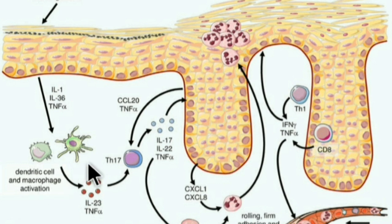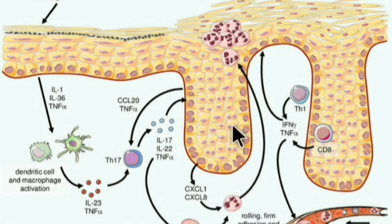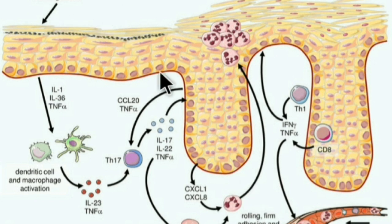Deletions of the LCE gene cluster 3B and 3C are also noted in psoriatic patients, leading to incomplete barrier repair after minor trauma. Various antigens can then penetrate easily, and the inflammatory response is continued.